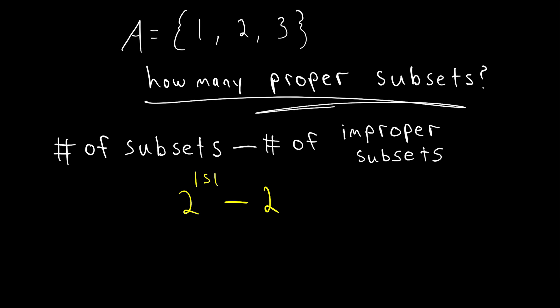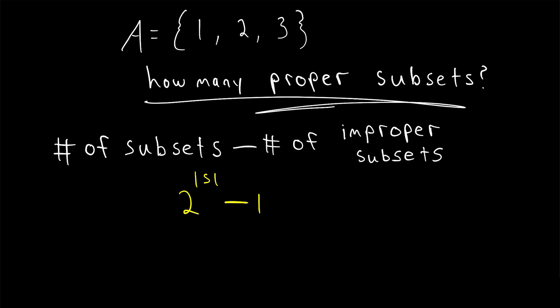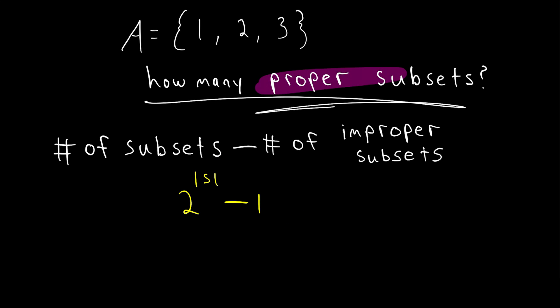In my experience, it's most common that a proper subset is any subset not equal to the original set. So our formula is: the number of proper subsets that a finite set has is two to the power of its cardinality minus one. Note that this works for the empty set as well, because the cardinality of the empty set is zero, two to the power of zero is one, and one minus one is zero — which is indeed the number of proper subsets that the empty set has.